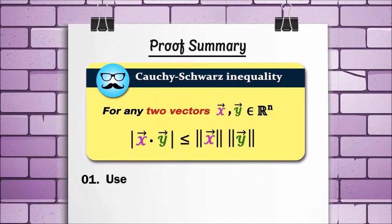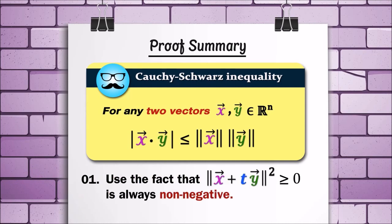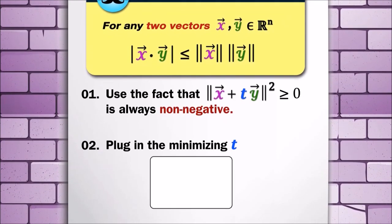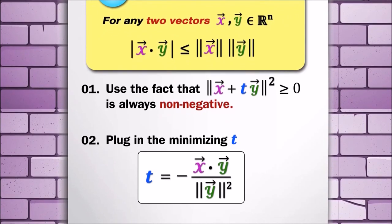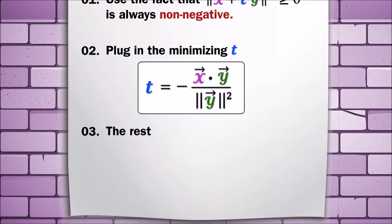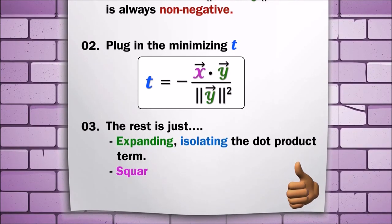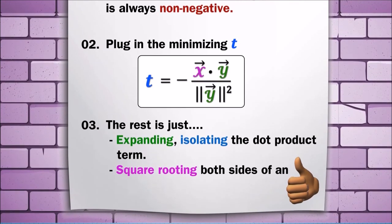To prove this, we are going to use the fact that the norm of x plus ty squared is always non-negative, and plug in the minimizing t from the previous lemma. The rest is just expanding, isolating the dot product term, and square rooting both sides of an inequality.